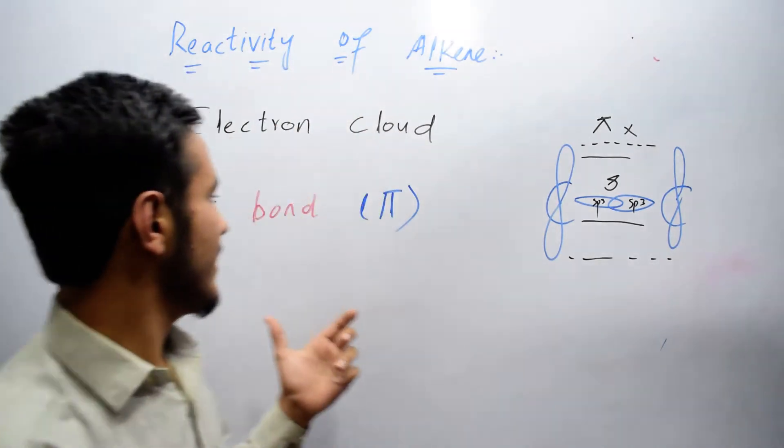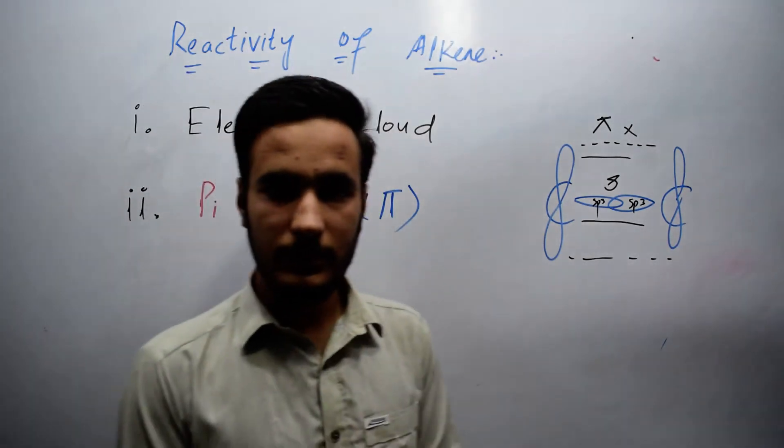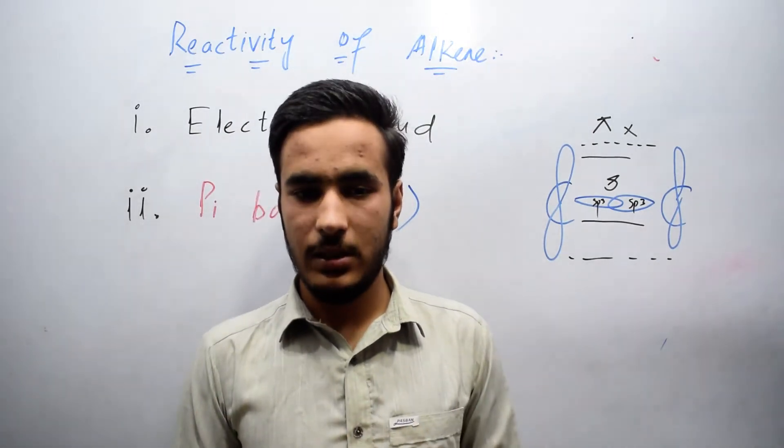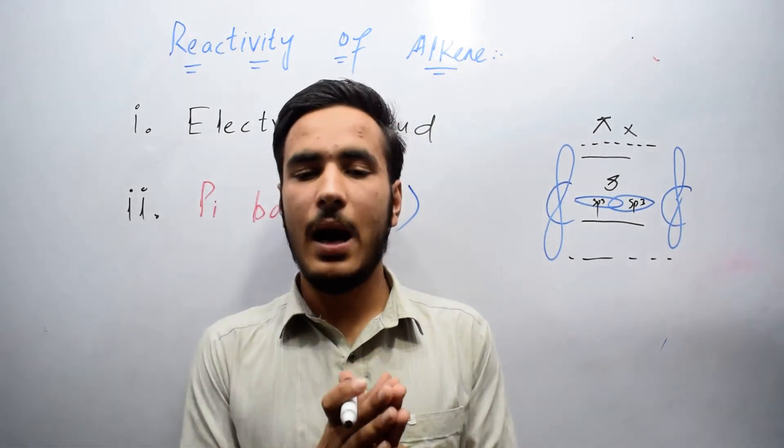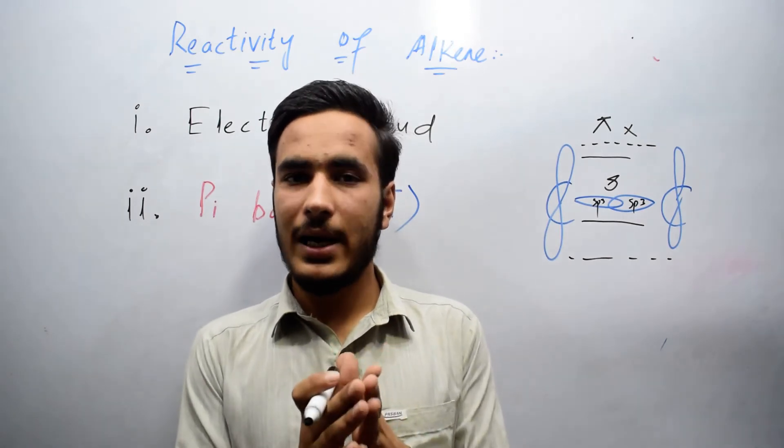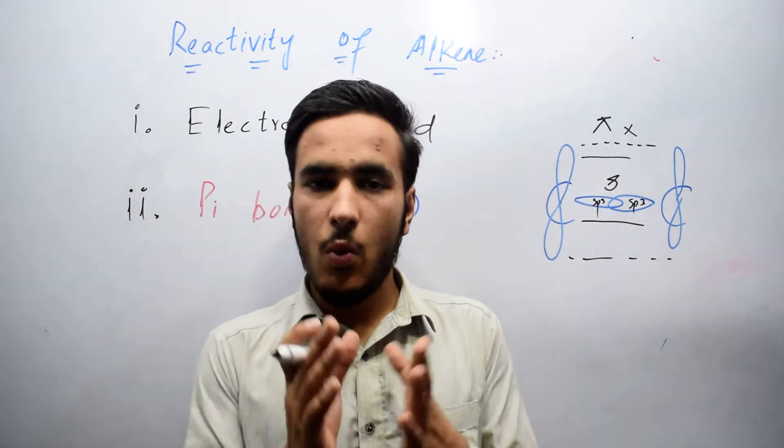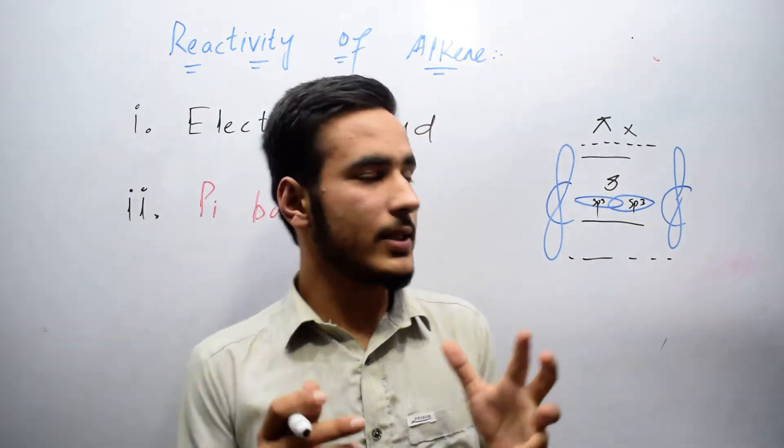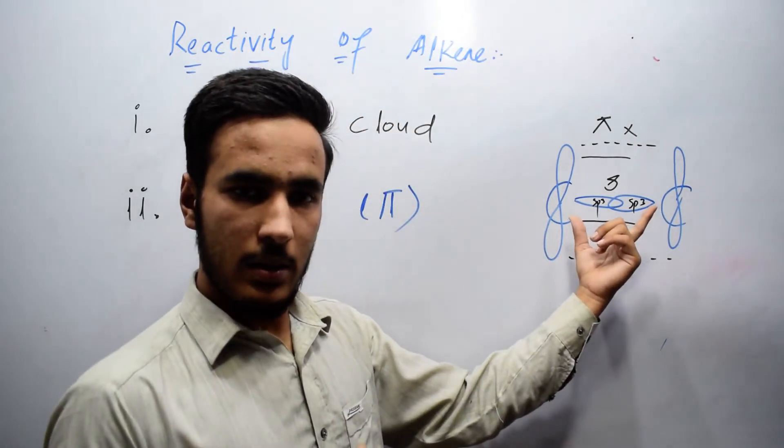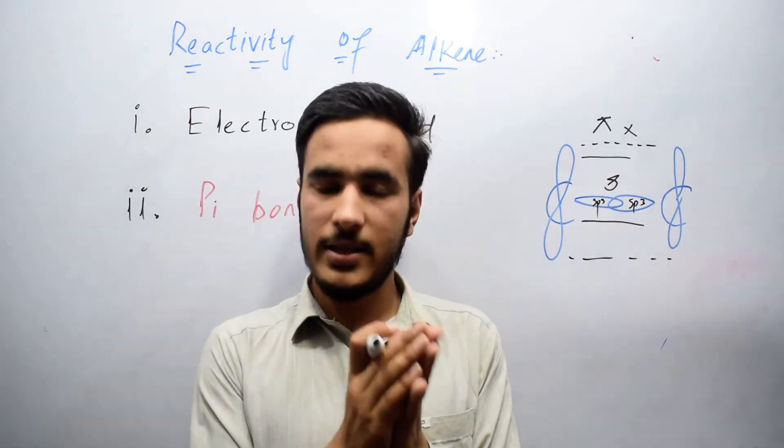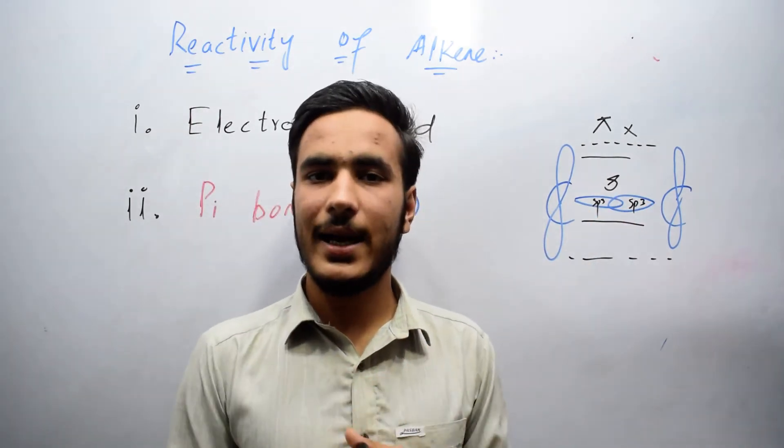The second reason is pi bond. Pi bond is the second reason for the reactivity of alkene because the overlapping of pi bond forming orbitals is not that much effective as compared to sigma bond. In alkane there exists only sigma bond, and the electron location in sigma bond is fixed. That's why electrophile cannot easily attack.